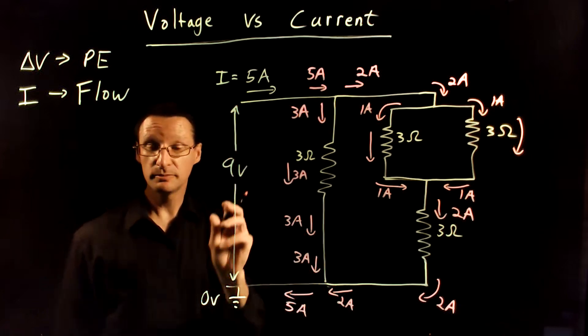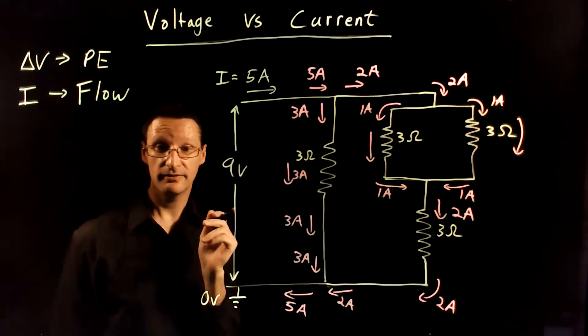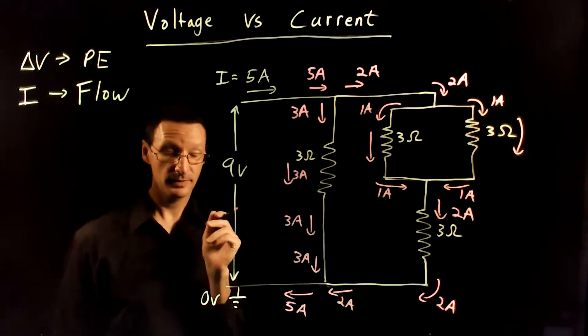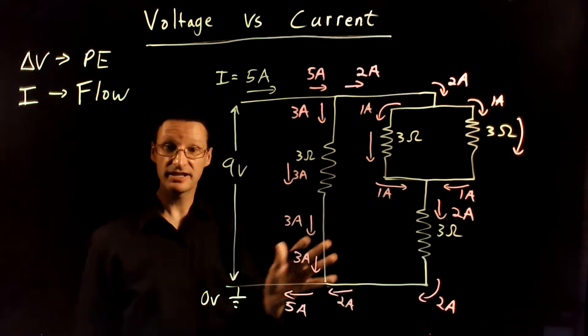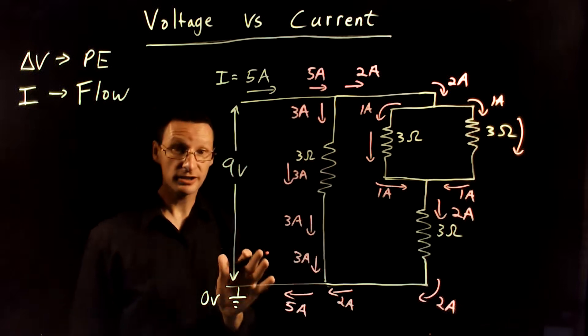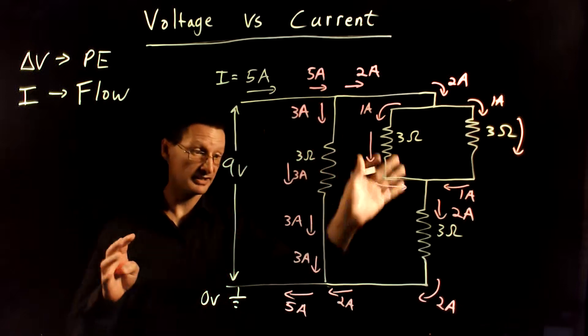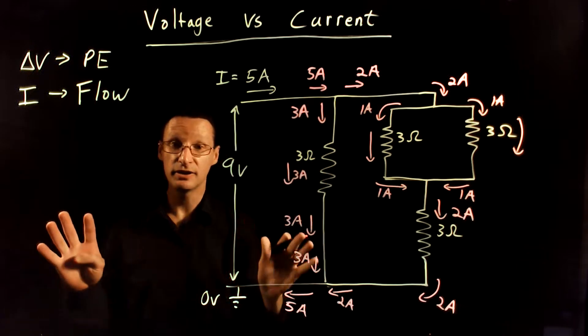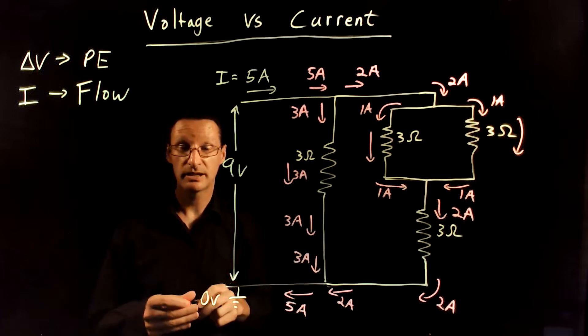You cannot have an accumulation of charge on either side of the battery. Hopefully this helps you understand how current behaves. It's very important to understand this model so that you can do more complicated problems later.